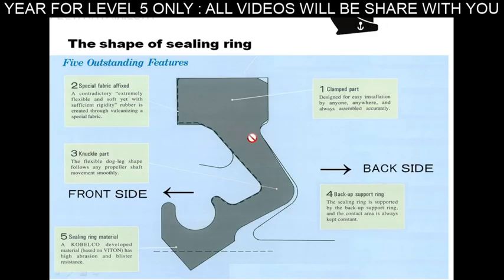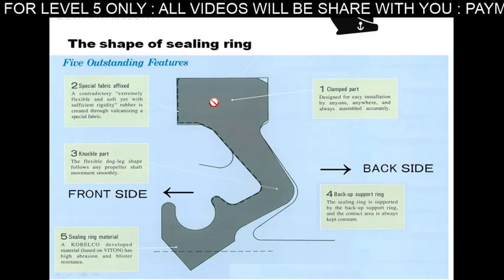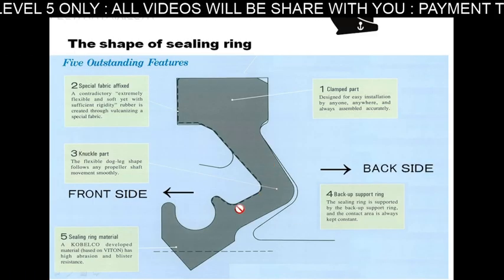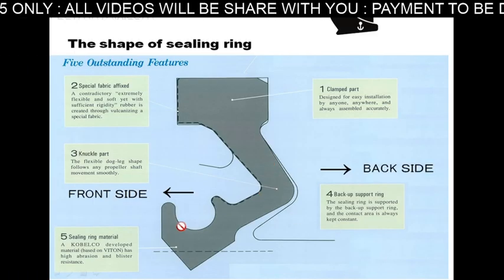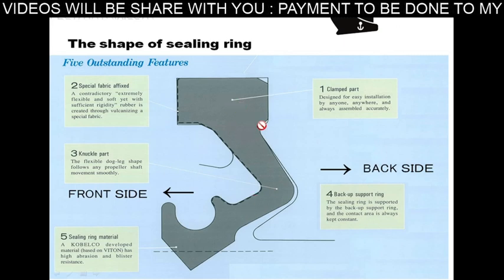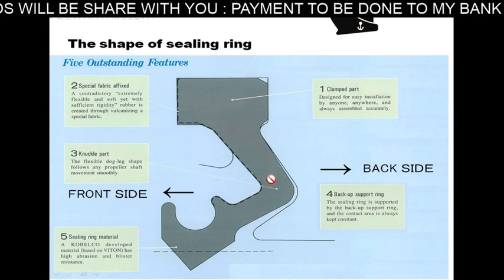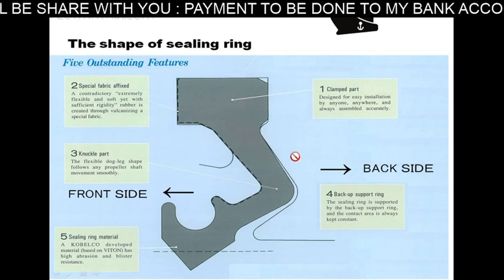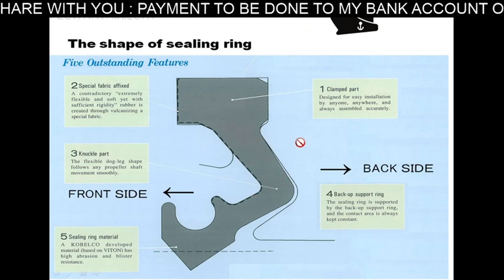This is the sealing ring and the shape of it. This is how the sealing ring looks inside the stern tube system.